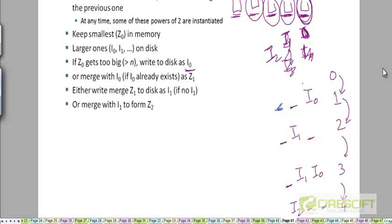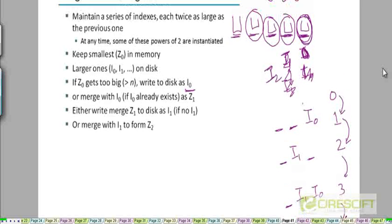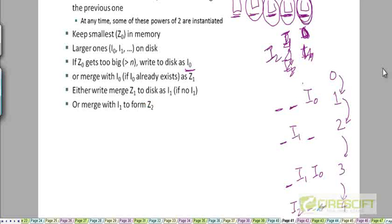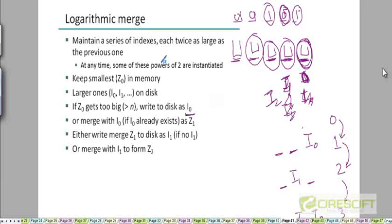What we are doing is counting up in binary by creating these indexes. At any stage we could have more than two indices — for example, counting up to 7 gives us I2, I1, and I0 simultaneously. When we merge two indices, they are always of the same size, so the merged index is twice their individual size. This maintains the property that each index is twice the size of the one at the next lower significant bit.